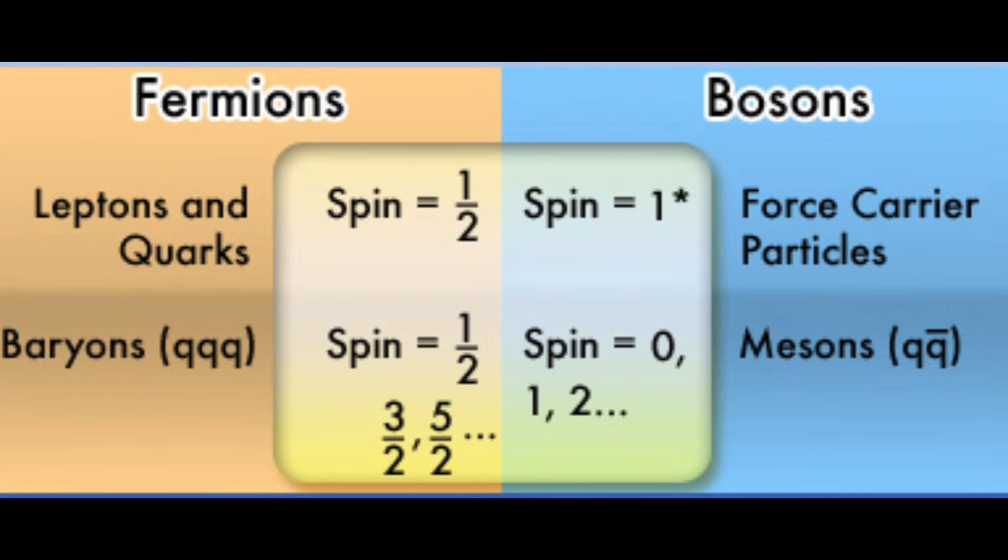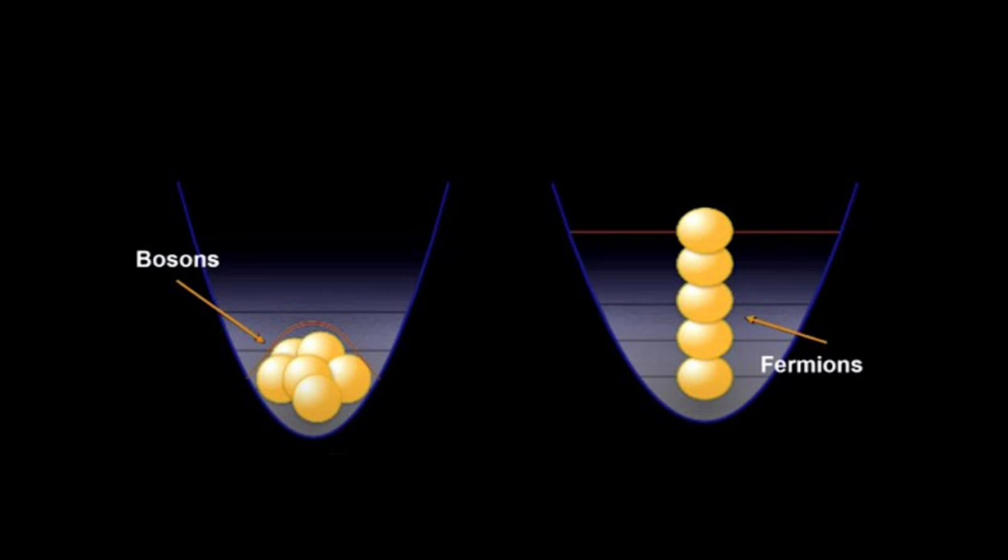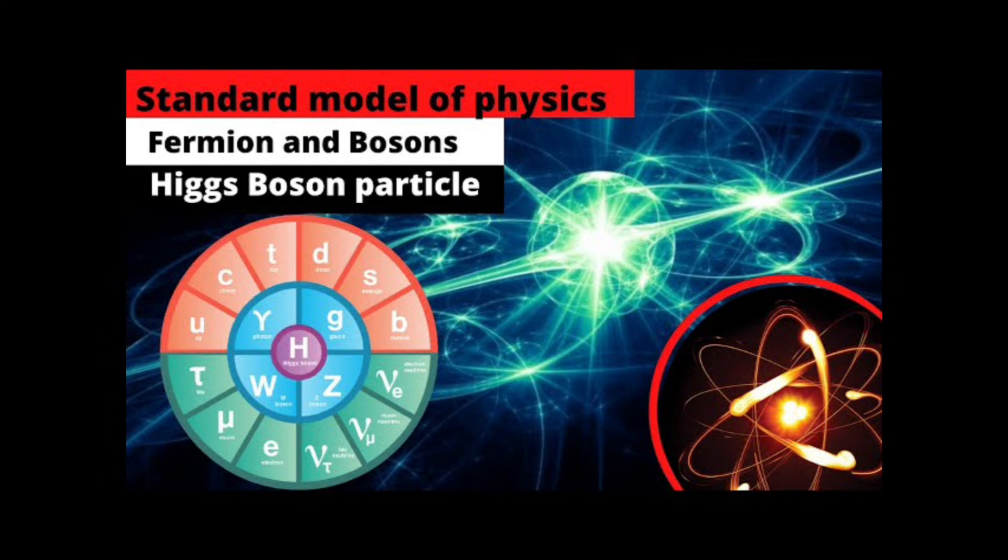Physicists have long grouped the most basic building blocks of our universe into two categories. One group consists of fermions, which include matter particles like electrons, protons, and neutrons.